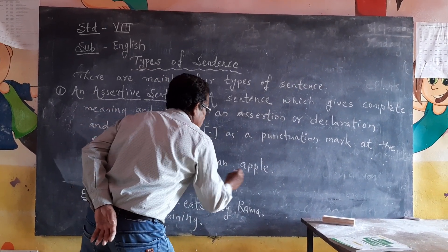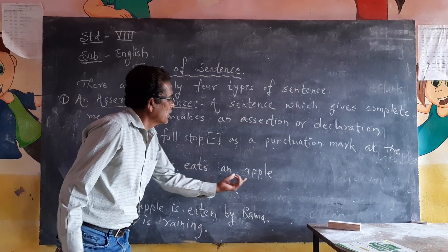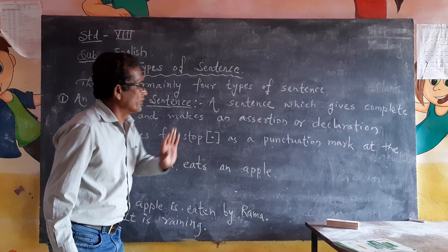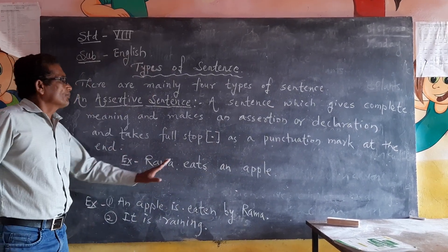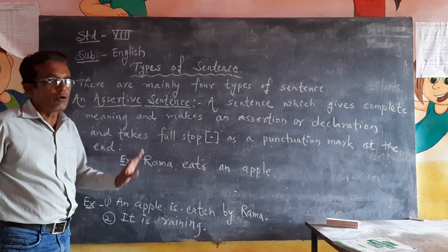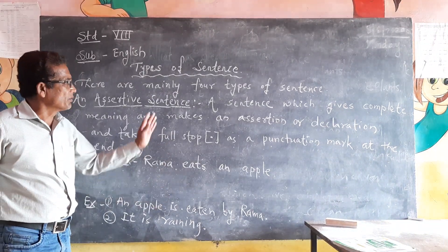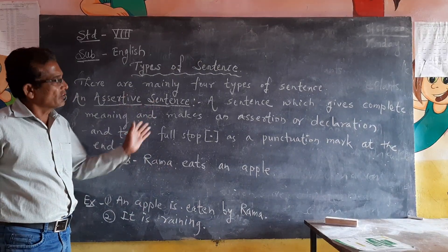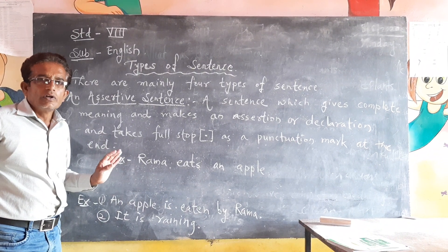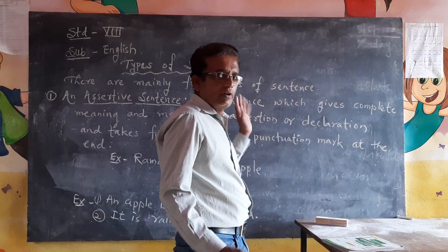For example: Rama is eating an apple. This is a sentence with a subject and object. If it is positive, there is no 'not'. In assertive sentences there are two types: affirmative and negative. We will study that in the next period.